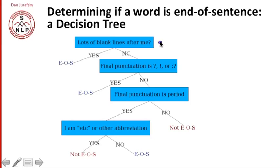So we say, am I in a piece of text that has a lot of blank lines after me? Well, if so, then I'm probably an end of sentence. What if there's no blank lines after me? Is my final punctuation a question mark or an exclamation point?